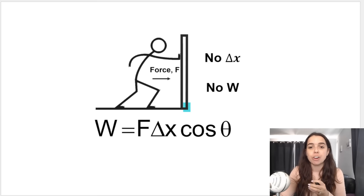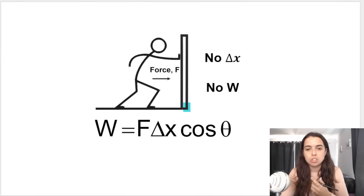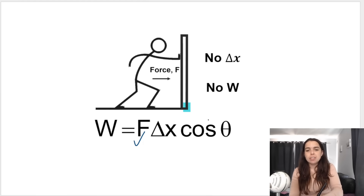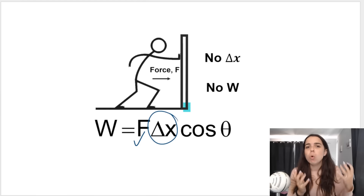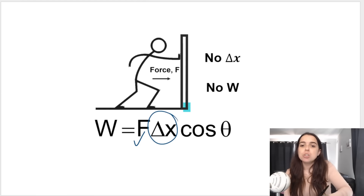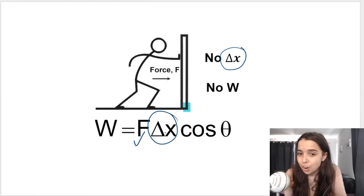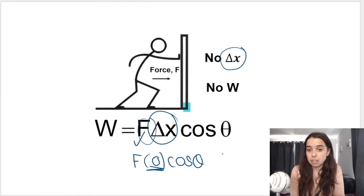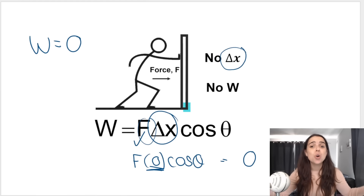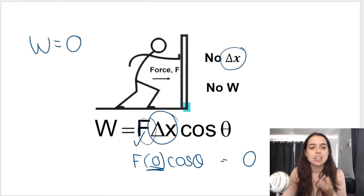Consider a person pushing against a wall with a certain force. Looking at the formula, we've got a force and an angle, but there's no displacement — the wall does not move. If there's no displacement, it means displacement is zero. It doesn't matter what the force is because you multiply it by zero, and zero multiplied by anything is zero. So the work done is zero — there's no work done by that force because the object did not move.